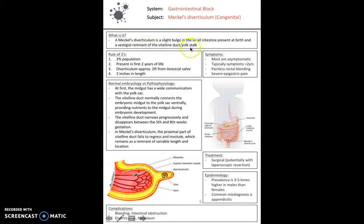There is a rule of twos with Meckel's diverticulum: 2% of the population is affected, it's present in the first 2 years of life, the diverticulum is approximately 2 feet from the ileocecal valve, and it's approximately 2 inches in length. Most people with Meckel's diverticulum are asymptomatic, and typically symptoms develop, if any, before 2 years of age.